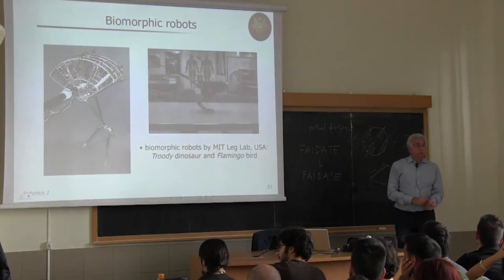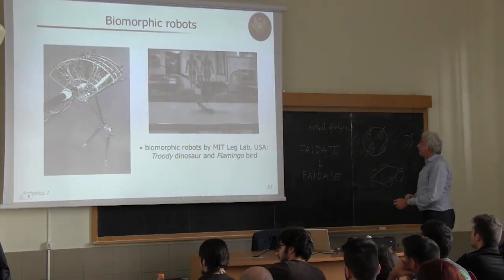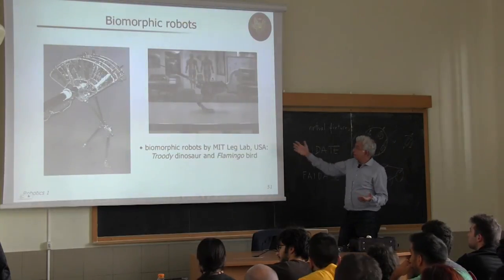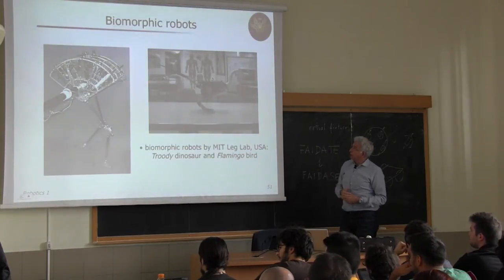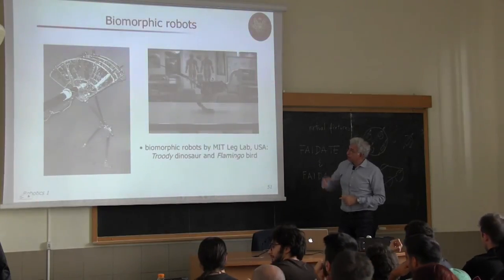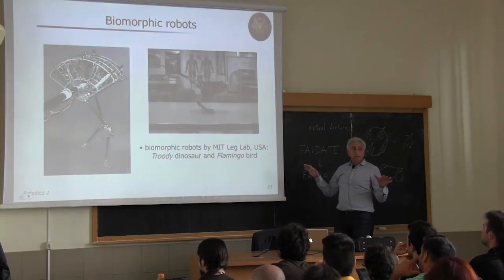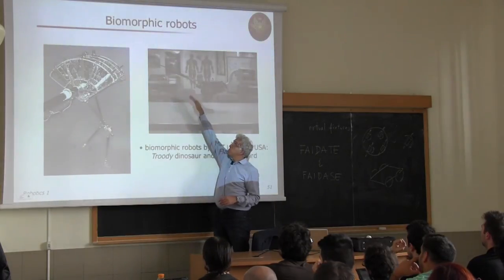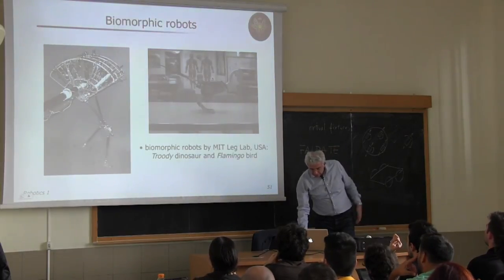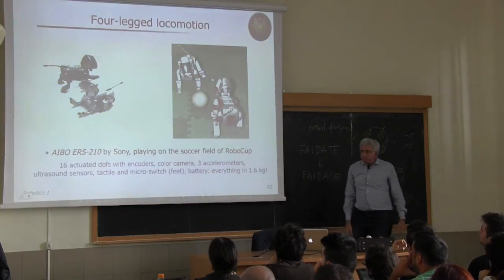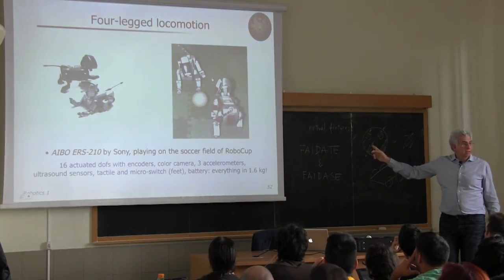Getting closer to biomorphism — not only human hands but also animal locomotion. The MIT Leg Laboratory developed many types of animal robots and locomotion systems. One is a flamingo type; another is a dinosaur-like robot that can jump and sustain equilibrium during flight by changing the position of its tail — as dinosaurs used to do. The Sony AIBO four-legged robotic dog is another example of biomorphic design.